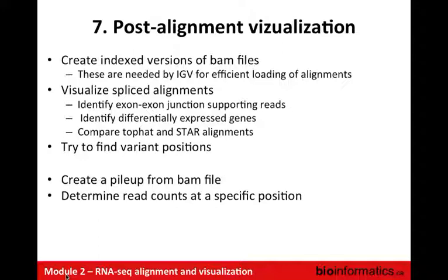Once we have alignments, we'll visualize them by creating indexed BAM files, which IGV needs to view them efficiently. We'll look for exon junction-supporting reads, examples of differentially expressed genes, and compare TopHat and STAR alignments. Then we'll find variant positions in the RNA-seq data, test tools to create a pileup from the BAM file, and explain what a pileup looks like — essentially a representation of what bases were observed at a particular position.